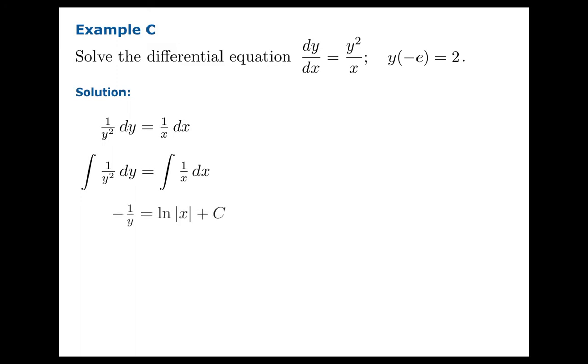Separate the variables, integrate. And now we're going to plug in our extra bit of information. In this case, solving for c might take a little more work. ln of the absolute value of negative e is the same as ln of e, which is 1. So c is negative 3 halves.